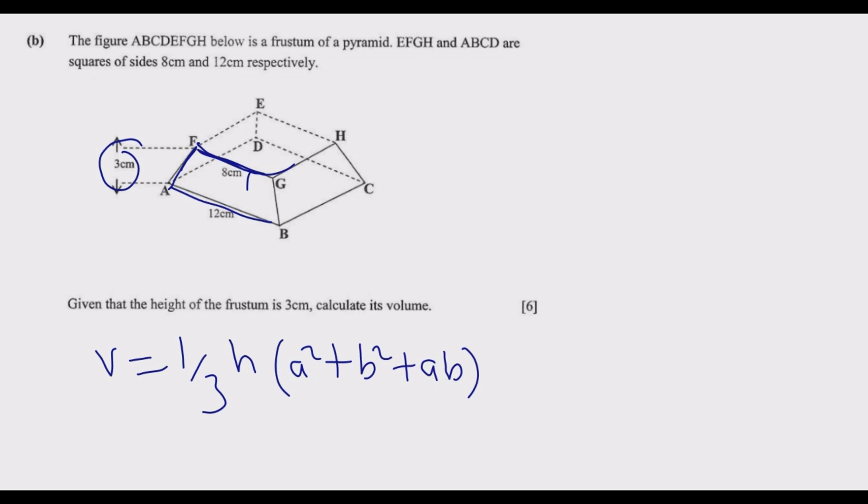What we know is h equals 3, a equals 12 centimeter, and b equals 8 centimeter. Substituting these values, we get one-third multiplied by 3.